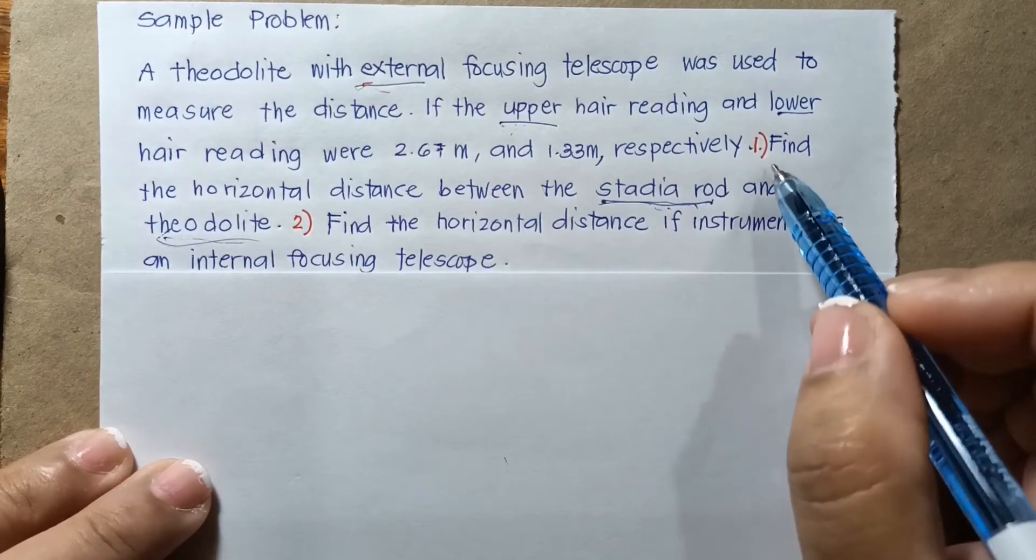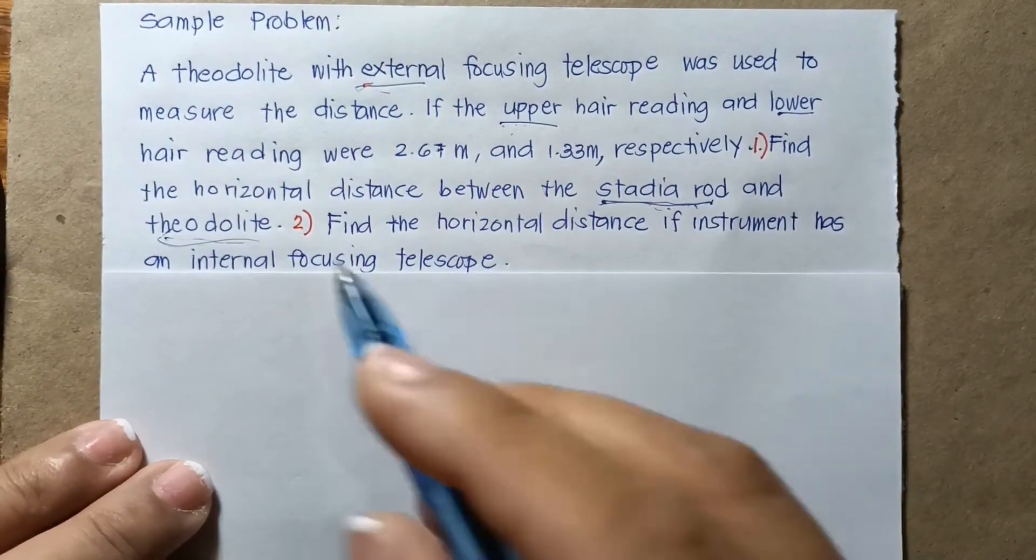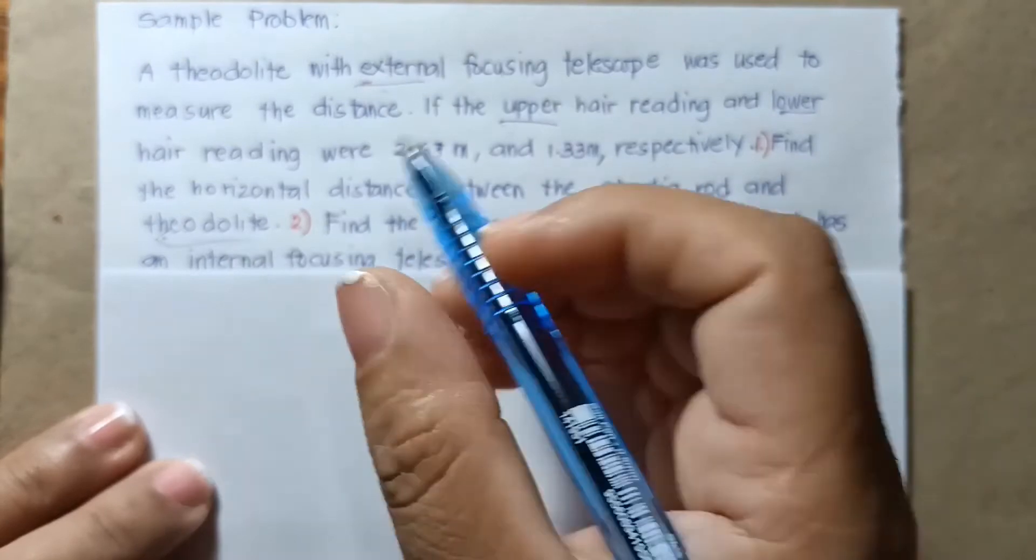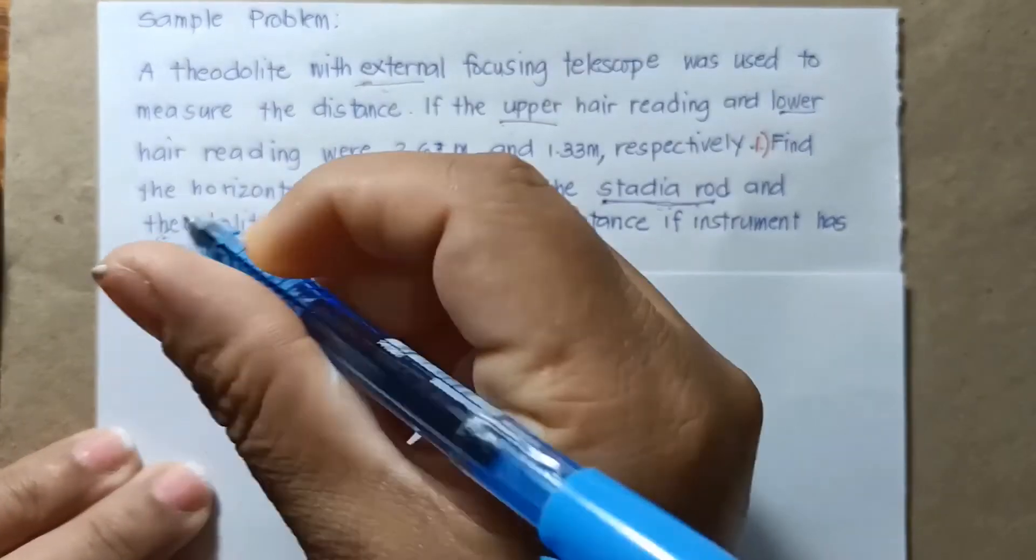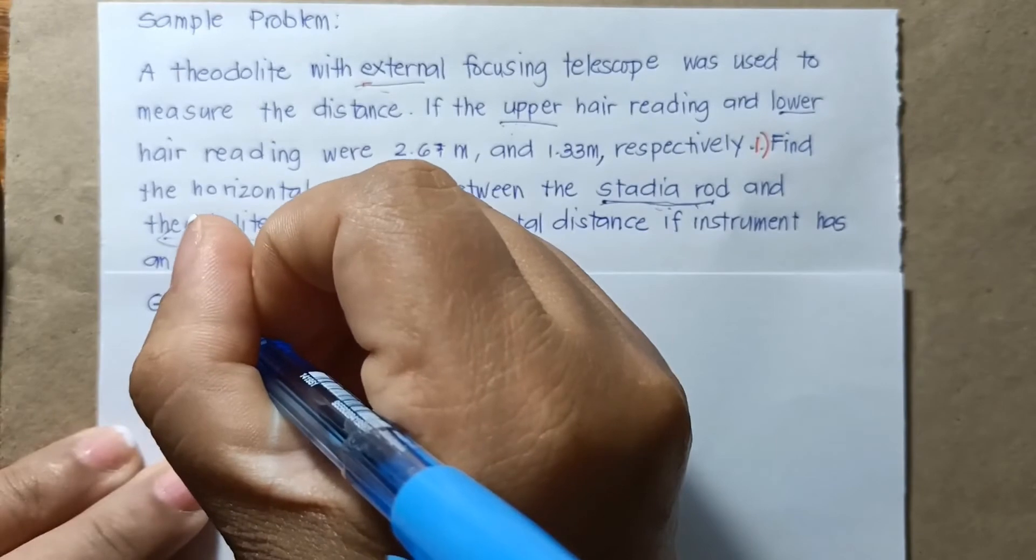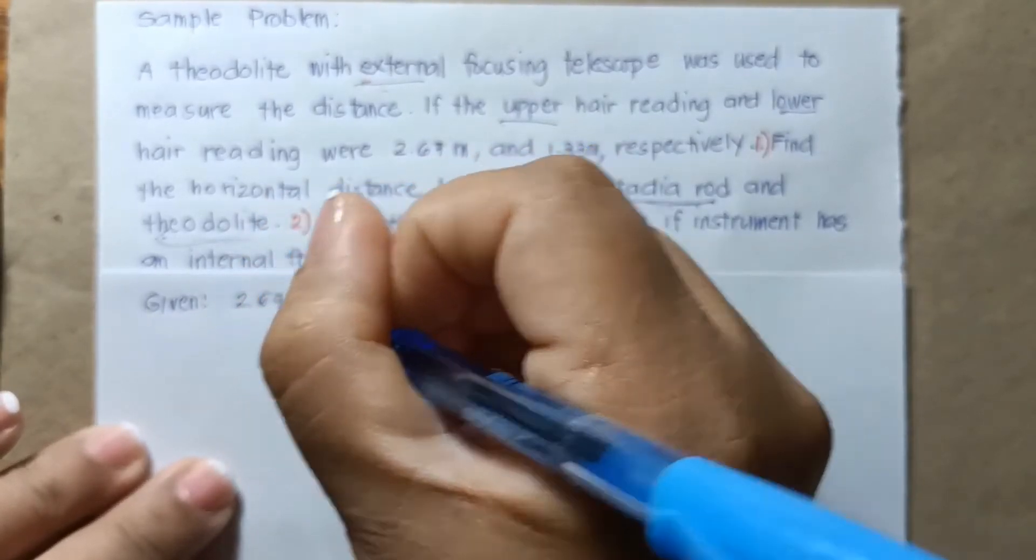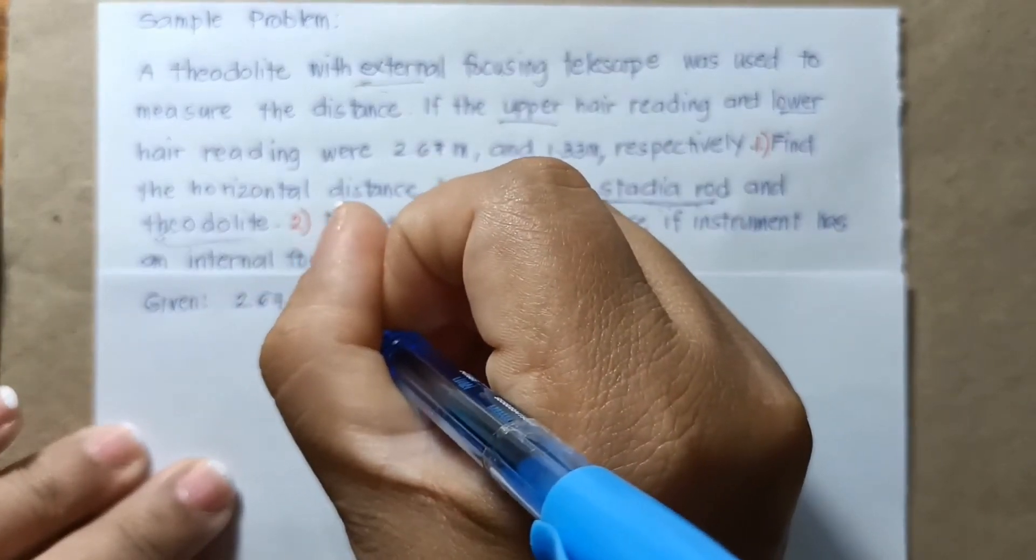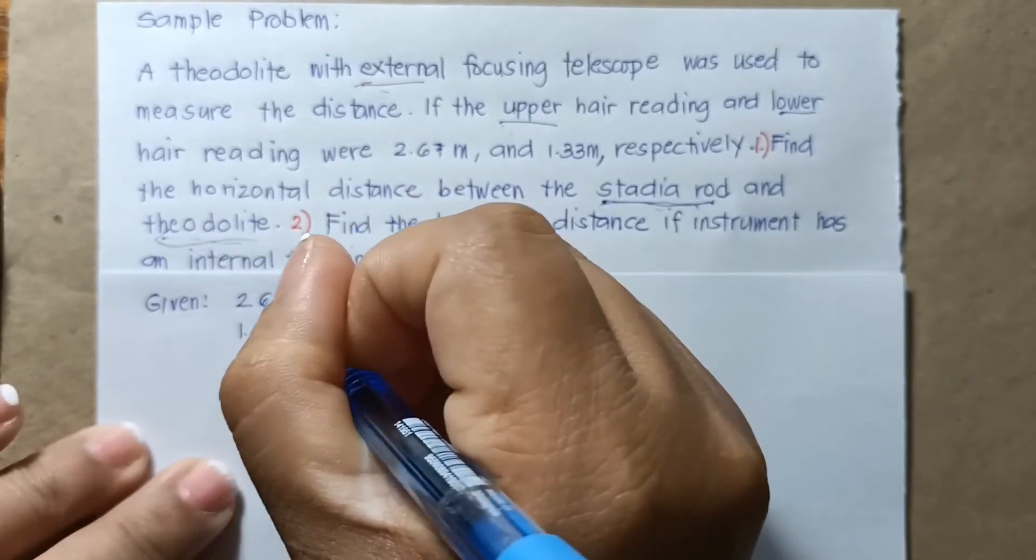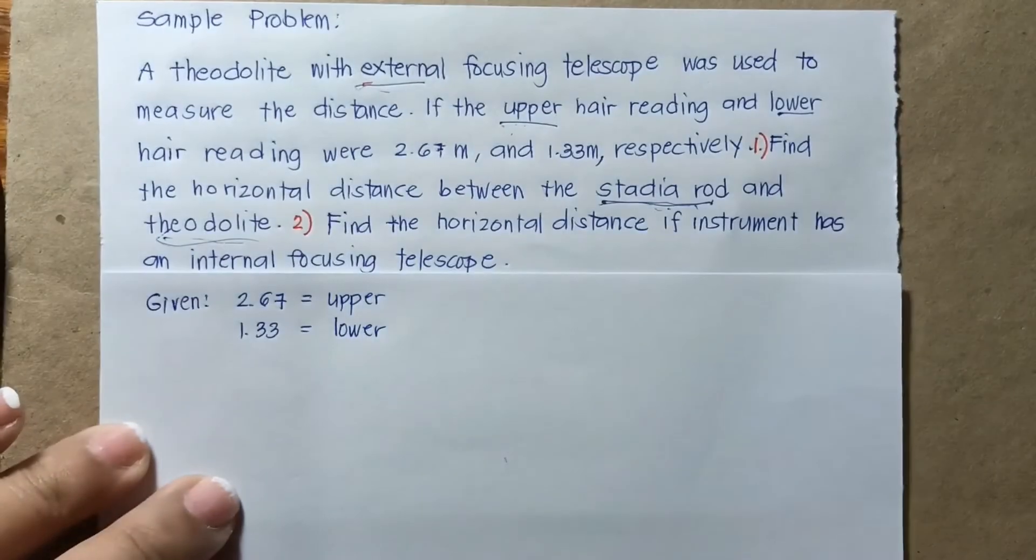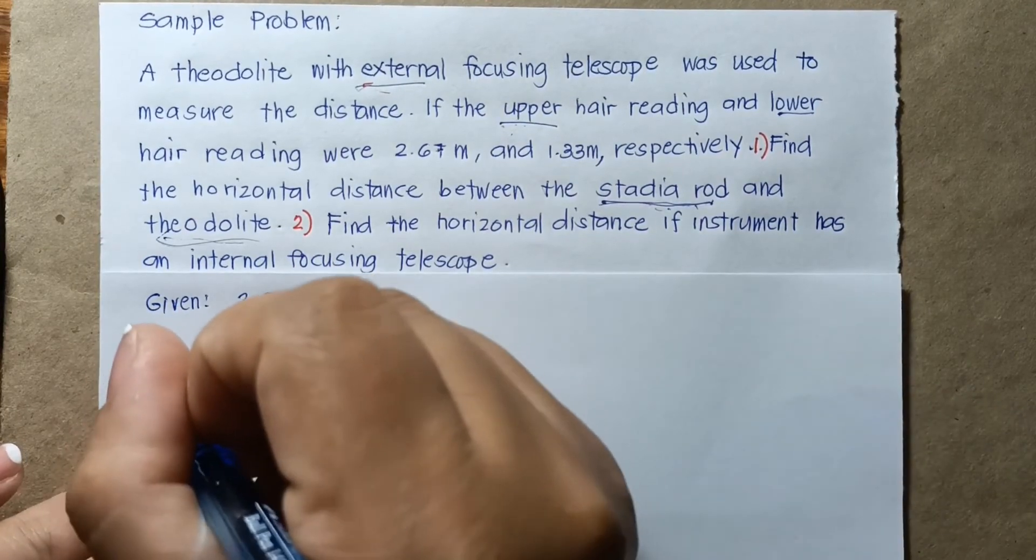And the requirement for number one is the horizontal distance between the stadia rod and the theodolite. So recalling, let me write first the given. We have 2.67, this is the upper, and 1.33, this is the lower hair reading, and we are asked to solve the horizontal distance.